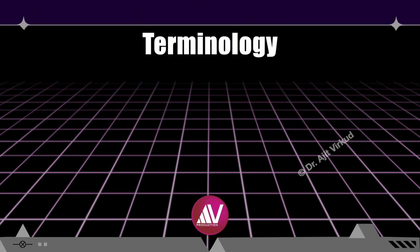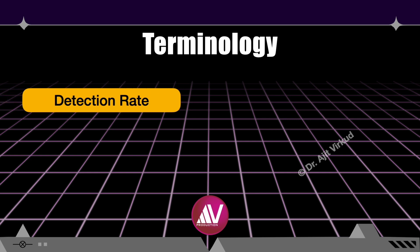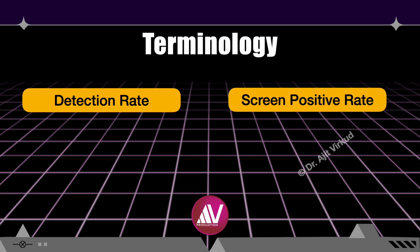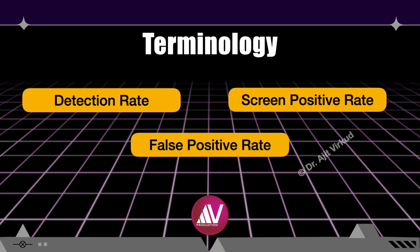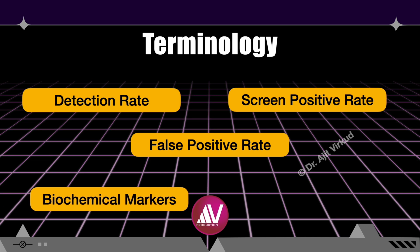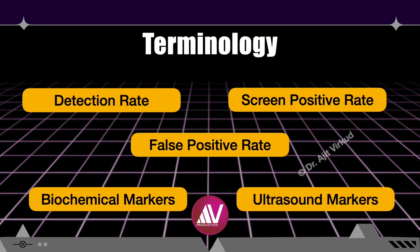I will now turn my attention to screening tests for aneuploidy detection. First, some basics on important terminology. Detection rate is the ability of a test to give a positive result in individuals who have the condition being screened for. Screen positive rate is the proportion of affected and unaffected individuals yielding a positive result. False positive rate is the proportion of unaffected individuals yielding positive results during diagnostic tests performed later. There are two types of markers: biochemical markers and ultrasound markers.